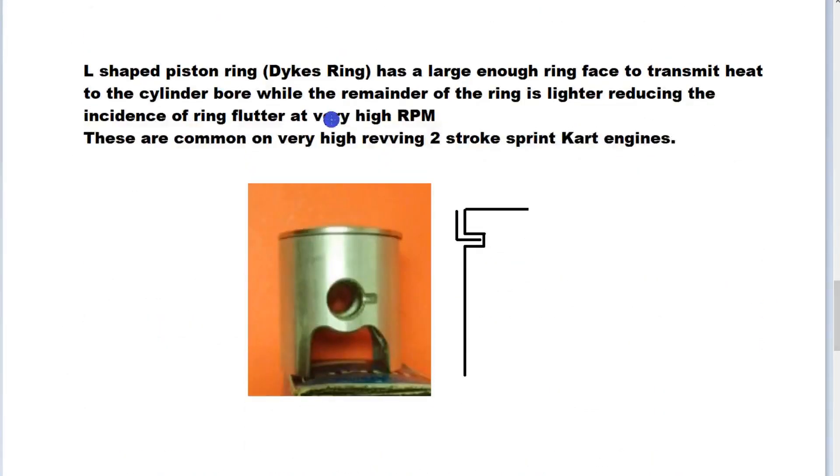If we have a very thin ring, we'll have a problem with the ring getting hot and a problem with wear. To overcome this, we can use what's called a Dykes piston ring, and that is an L-shaped piston ring. The benefit of the L-shaped piston ring is it's still got quite a large face on the actual piston ring which gives us good thermal conductance to our cool cylinder wall, but the rest of the piston ring is still quite small in comparison to a completely rectangular ring.